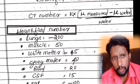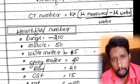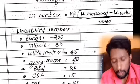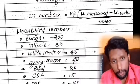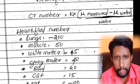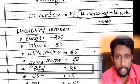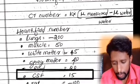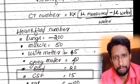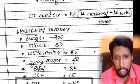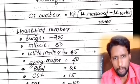CT number values for tissues: lungs are approximately minus 200 to minus 50; white matter is plus 45; gray matter is approximately plus 40; blood is plus 20; CSF is plus 15; and fat is approximately minus 100.